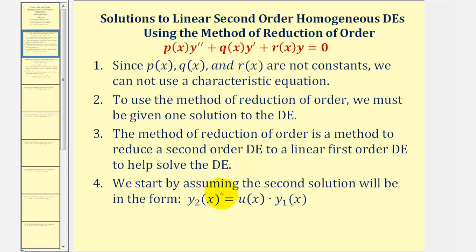The way this method works is that we assume the second solution, y sub two of x, is equal to u of x — some function of x — times y one of x, where y one of x is the given solution. Then we find y prime and y double prime, perform substitution into the given differential equation, which we can then reduce to a linear first order differential equation.